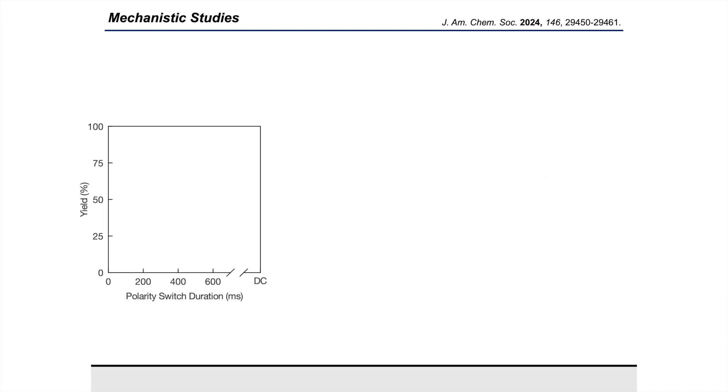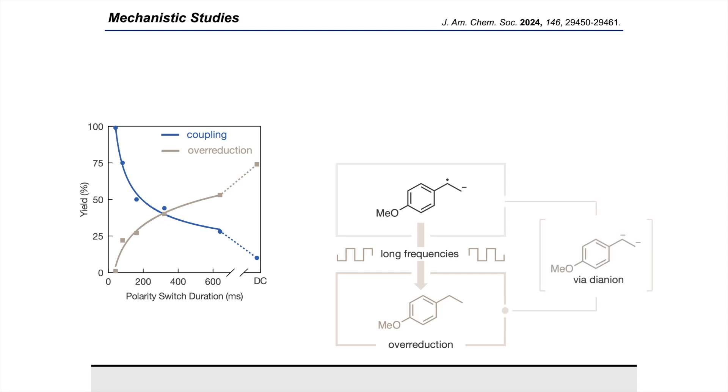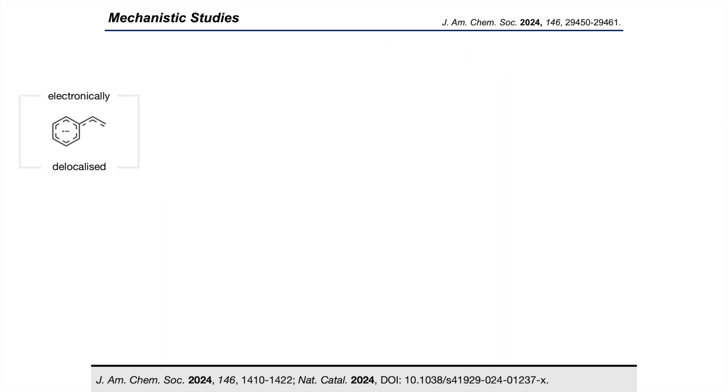This whole reaction design was contingent upon the use of rapid alternating polarity, and to ensure its necessity we investigated the effect of that polarity switch duration on the reaction outcome. As we lengthened that switch duration longer and longer towards an infinitesimal amount, which would be direct current or DC, we observed a complete reversal in the reaction profile from coupling to saturative over-reduction. This provided evidence to suggest that longer pulse durations afforded enough time for over-reduction and protonation of the alkene via that dianion intermediate, while short frequencies suppressed this and permitted coupling.